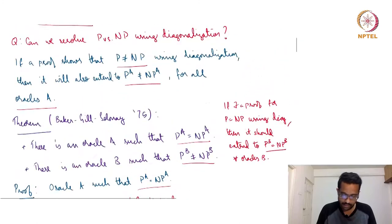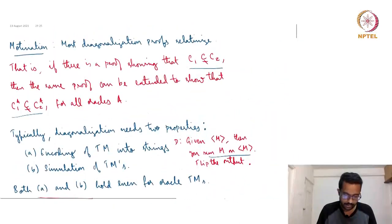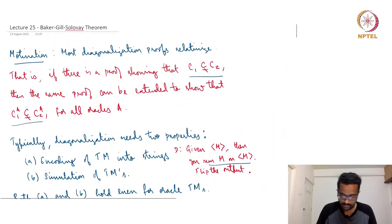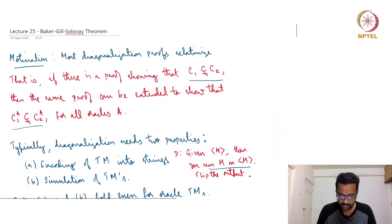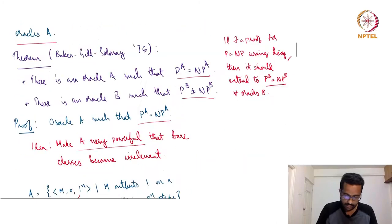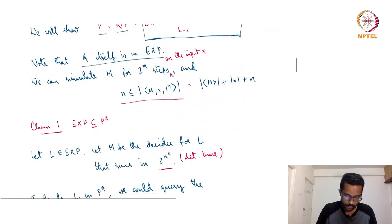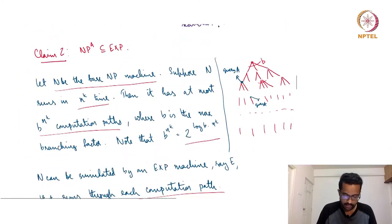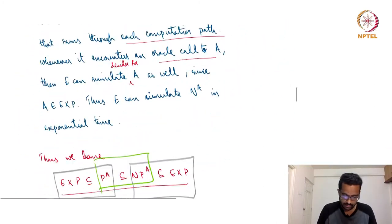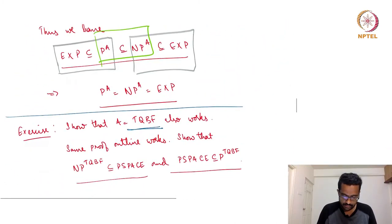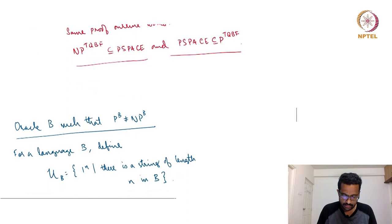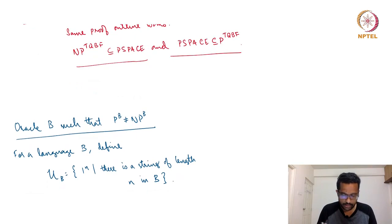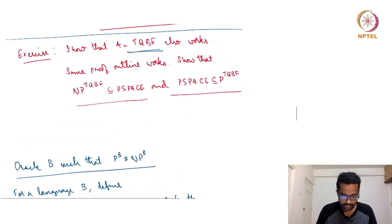With that, I will conclude this lecture part. I will show the oracle B for which P^B is not equal to NP^B in the next lecture.